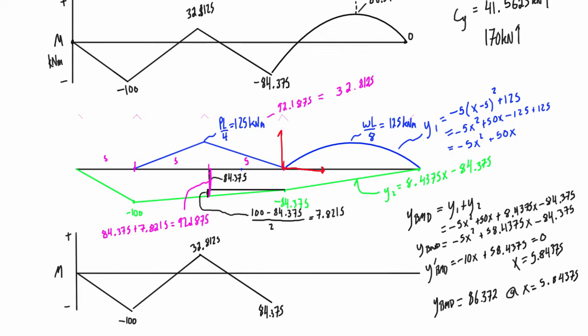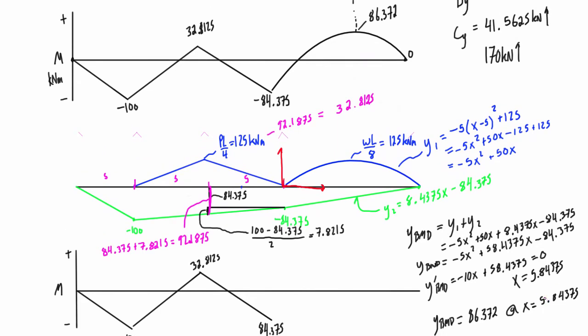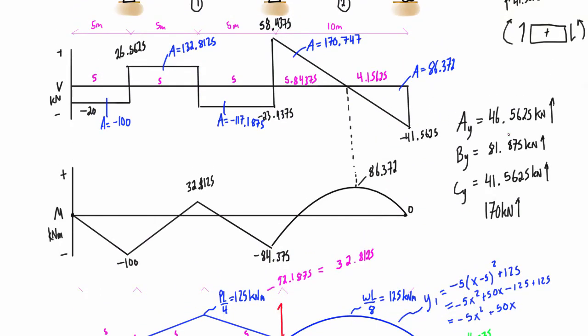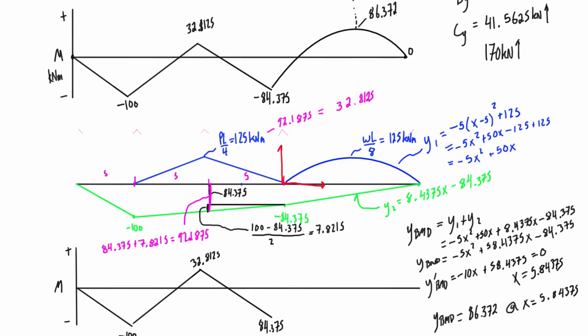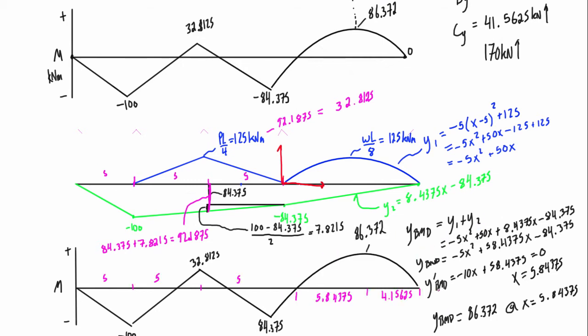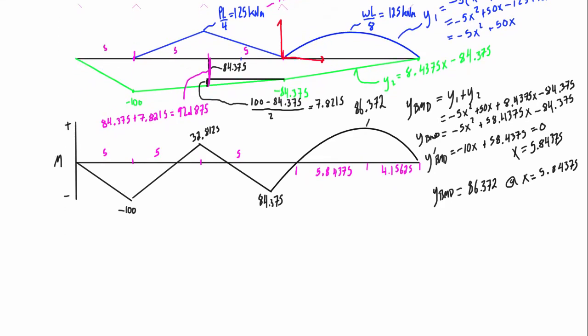Comparing that to what we got doing it the other way: the distance was 5.84 out and 86 units up — exactly matching. We have 5.8437 units to the maximum and a magnitude of 86.372, confirming that adding these two curves at every point gives the exact same bending moment diagram as the other method where we separated everything and drew the shear force diagram first. Honestly, I think this way is harder and takes longer, so I'd recommend the other method — but it's good to know this approach is valid.